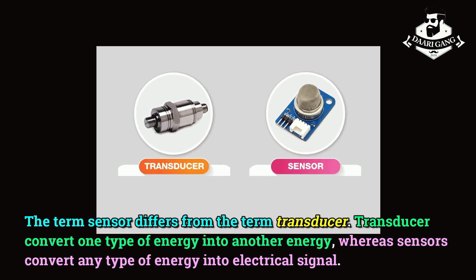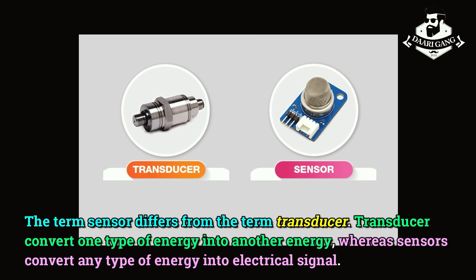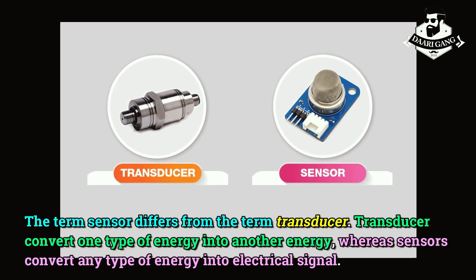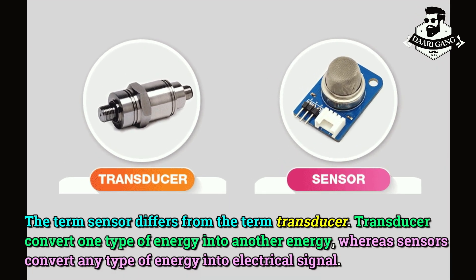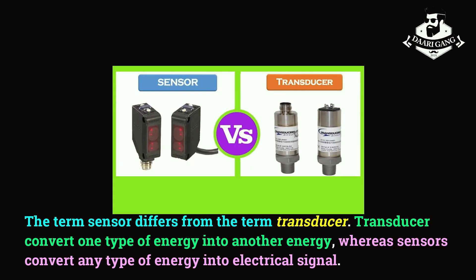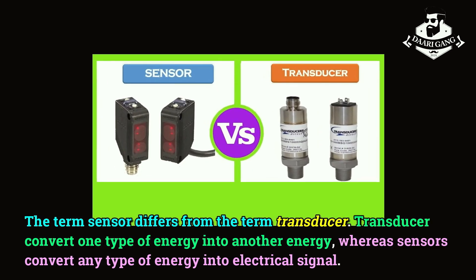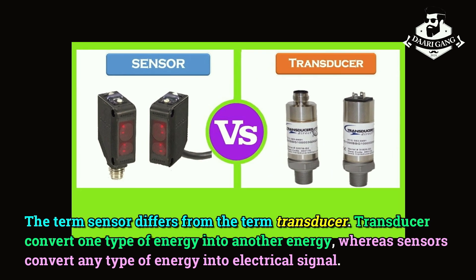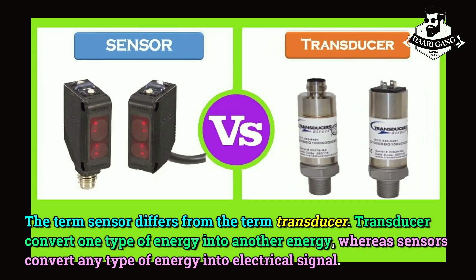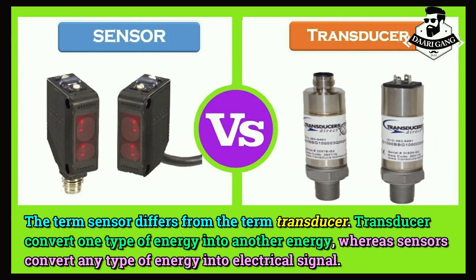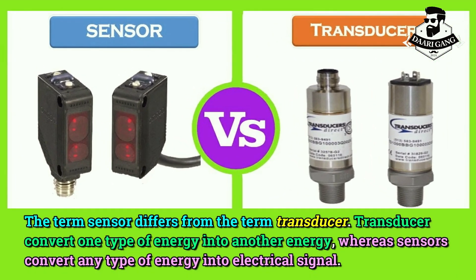The term sensor differs from the term transducer. Transducers convert one type of energy into another energy, whereas sensors convert any type of energy into an electrical signal.